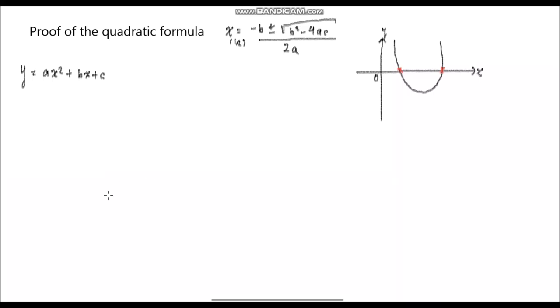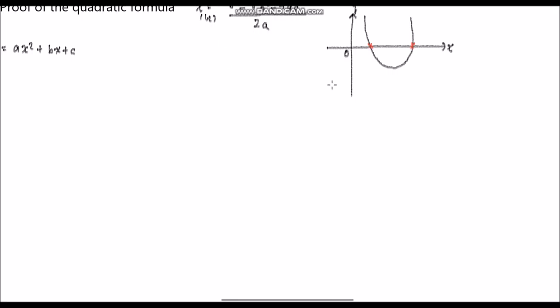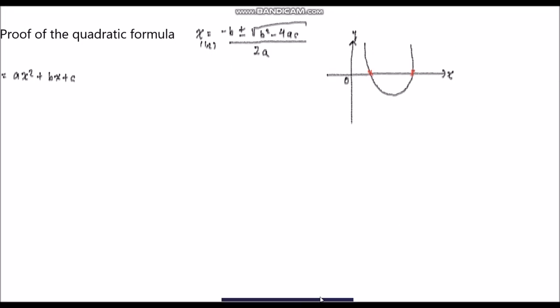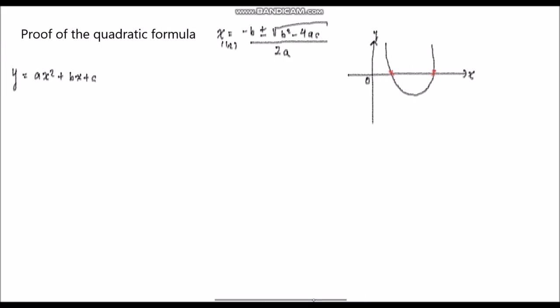In this video, we're going to prove the quadratic formula, which is x₁,₂ = (−b ± √(b²−4ac)) / 2a. I learned this quadratic formula in 9th grade, which is middle school. This formula is very, very useful — I'm using it in higher grades as well, especially if the quadratic equation cannot be factored.